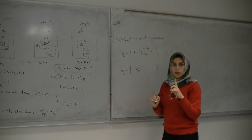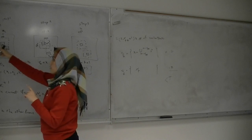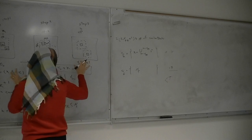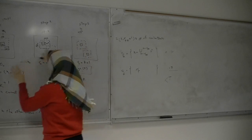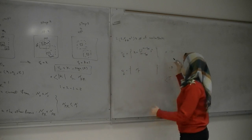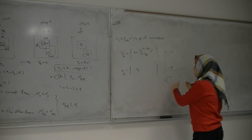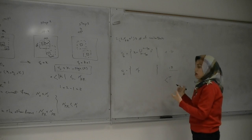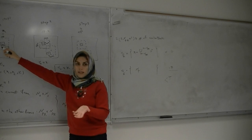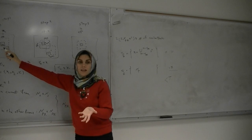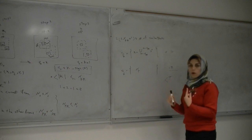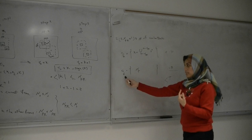SX-hat has at least one block: the reference block itself. Even if all other candidates in other frames exceed the dissimilarity threshold, the reference block - which is exactly similar to itself - ensures at least one block is always in SX-hat.